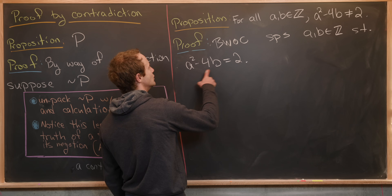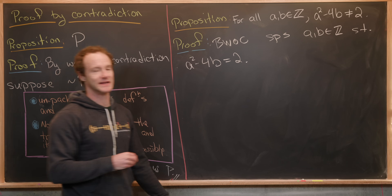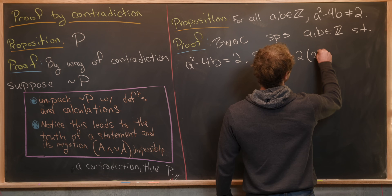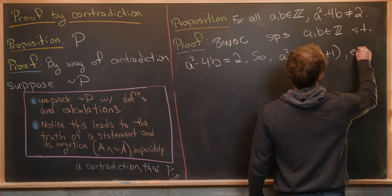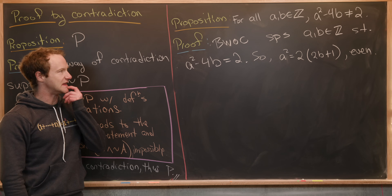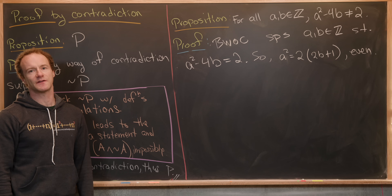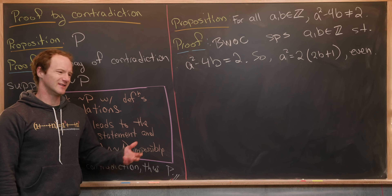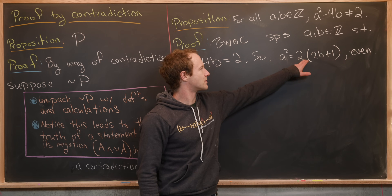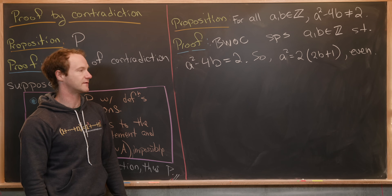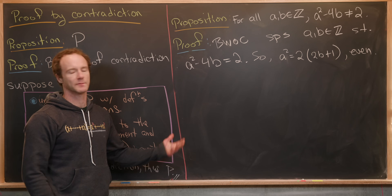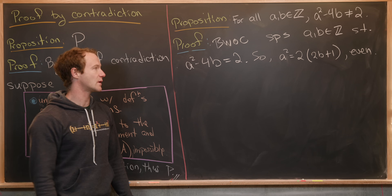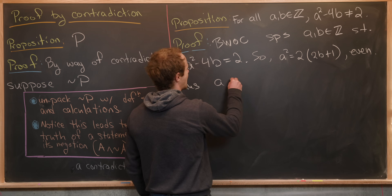Notice that we can rearrange to see that a squared is even. Specifically, a squared equals two times the quantity two b plus one, which is even. Note that this number is congruent to two mod four, and perfect squares are never congruent to two mod four — but we'll prove this without using that fact. Since a squared is even, we conclude that a is even.